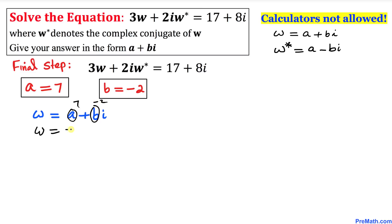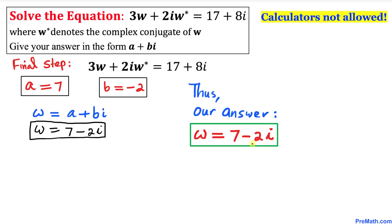So our complex number w becomes 7 minus 2i. That is our answer. Thanks for watching, and please don't forget to subscribe to my channel for more exciting videos.